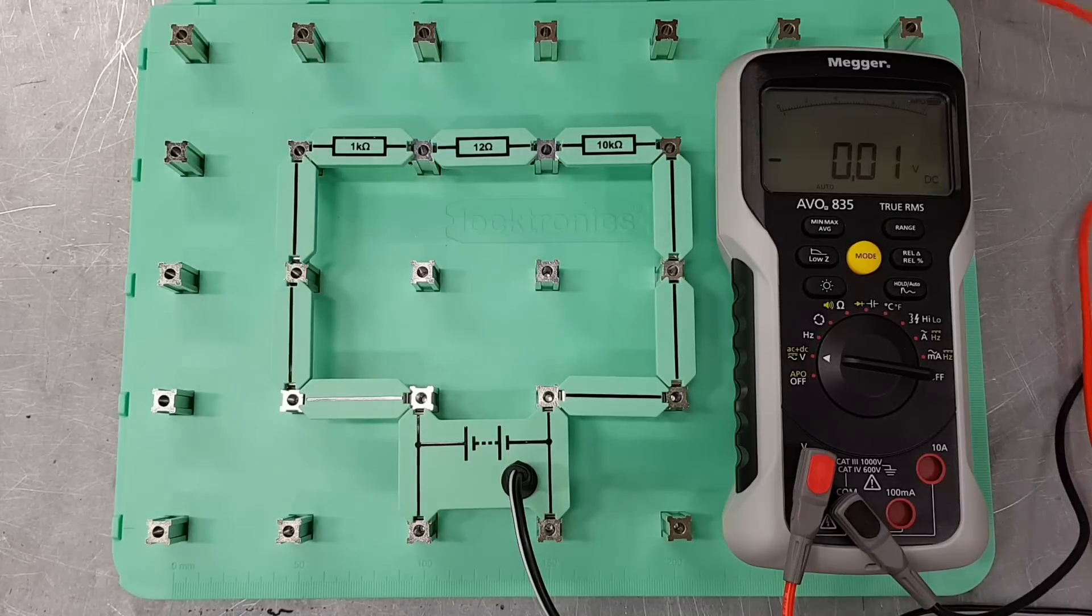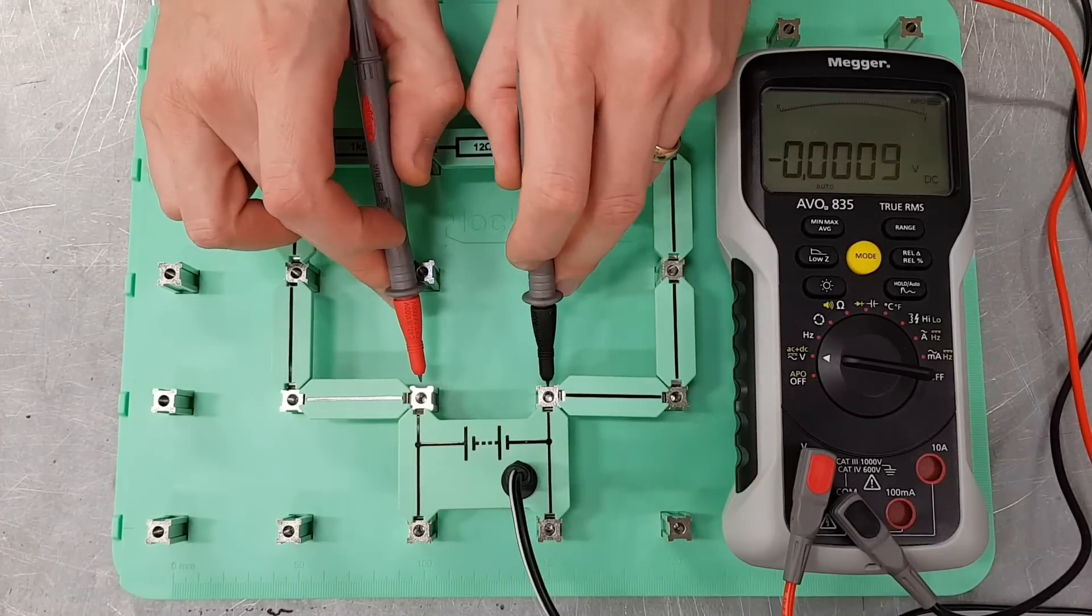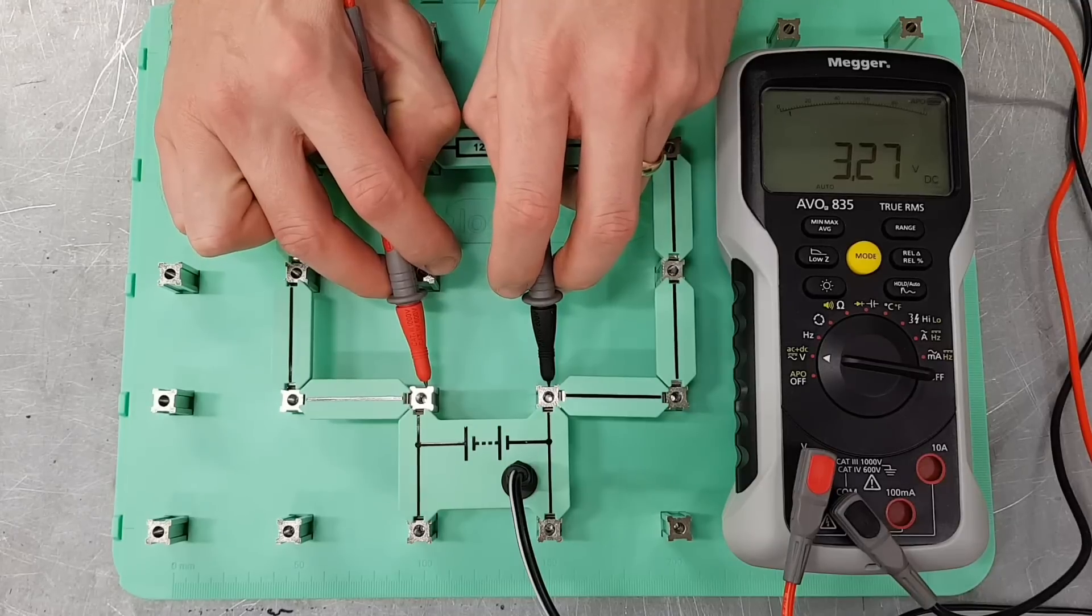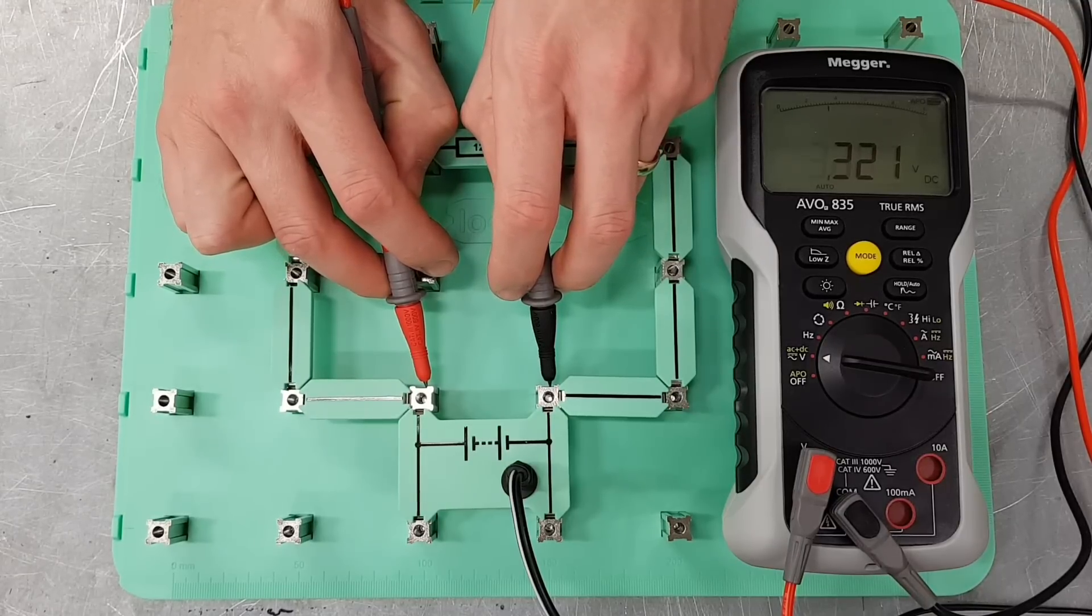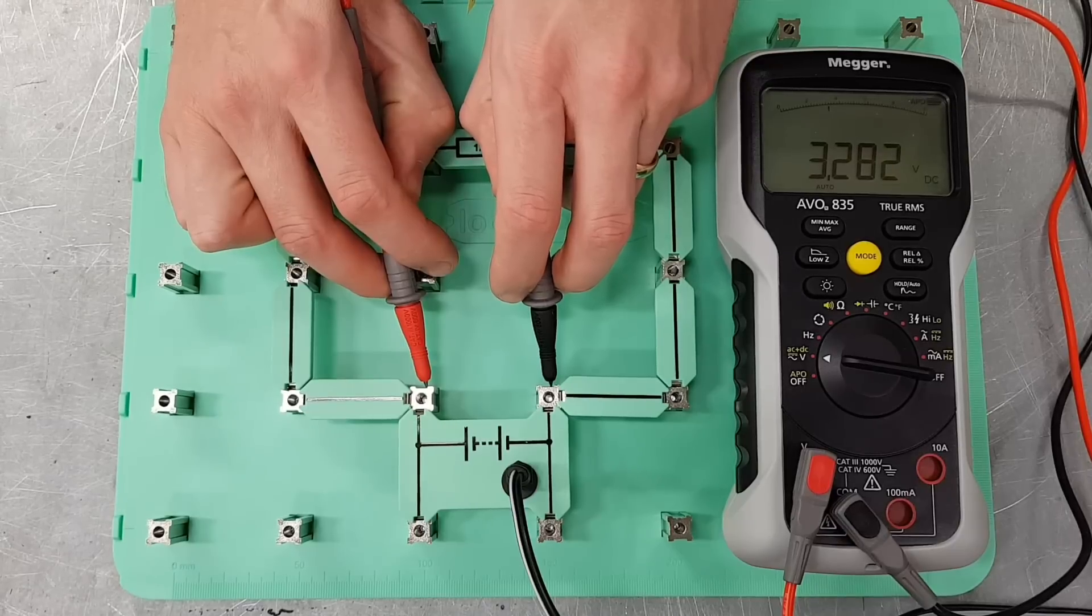Now the supply that we've got connected up at the moment is measuring three volts so let's measure the input voltage across here. So we can see there that the input voltage here is 3.27 volts which is giving us a nice reading on the DC voltage there.